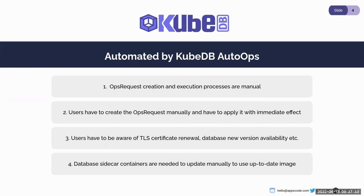Let's think about a scenario. Say a user deploys a TLS-secured MongoDB. The user must always be aware of the TLS certificate expiry date. When renewal time comes, they have to create an ops request manually and execute it with immediate effect — there's no scope to execute it in a specific time when traffic tends to be low. For database upgrades, the user must similarly be aware of new version availability and manually create and execute the request.